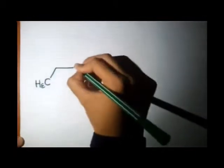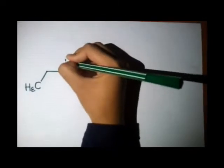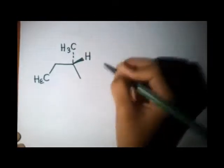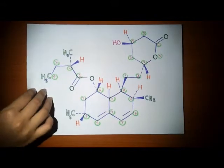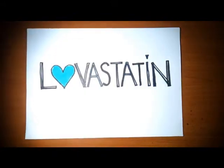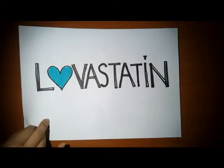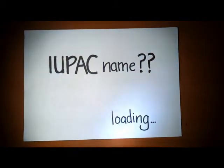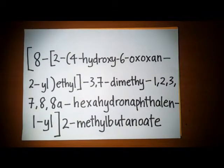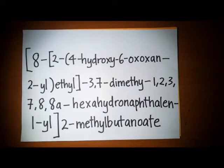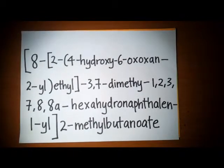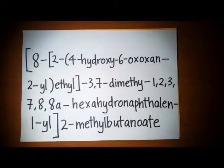Chemical structure of Lovastatin. The trivial name and IUPAC name: the IUPAC name is 2,4-dihydroxy-6-oxazine, 2-ethyl-3,7-dimethyl-1,2,3,7,8,8a-hexahydronaphthalein, 1-ethyl-2-methylbutanoate.